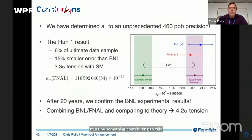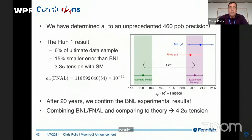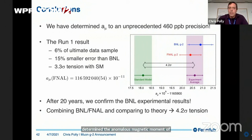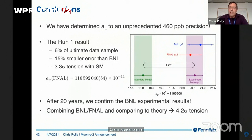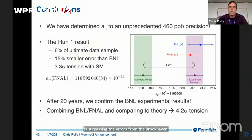In conclusion, we've determined the anomalous magnetic moment of the muon to an unprecedented 460 parts per billion. Our result is really just a small fraction of our data, but it's already surpassing the errors from the Brookhaven experiment. And after 20 years of people wondering about this mystery from Brookhaven, the headlining news is that we confirmed the Brookhaven experimental results.